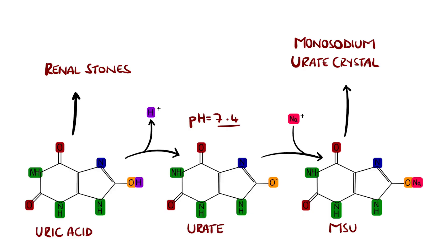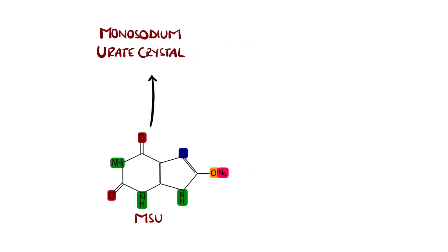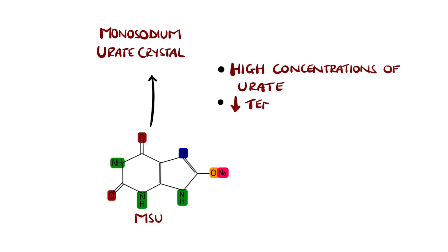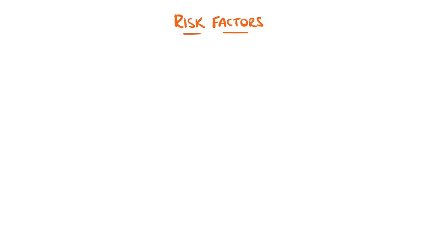Monosodium urate precipitates and forms crystals when certain conditions are met, mostly by having sustained high concentrations of urate, but also local factors like low temperatures, pH, and even the components of cartilage itself. Presence of these crystals within the joint and surrounding tissue is what ultimately gives the symptoms of gout.